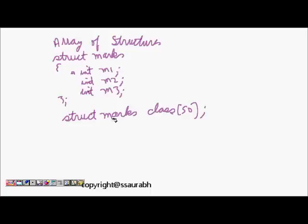So let's say I have struct marks class of 50, so I have marks of 50 students and I can see their marks in all three subjects. So let's say I want to see that 25th student's marks, so it will be basically class 24, minus 1 because the array element starts from 0. So class 24 dot m1, dot m2, class 24 dot m3. So this is the way you have to access the different students' marks. So this is array of structures.